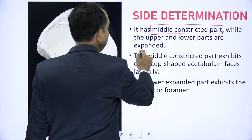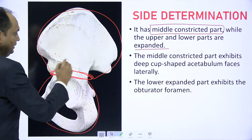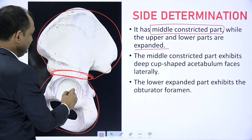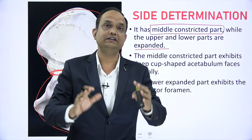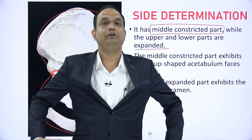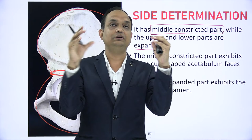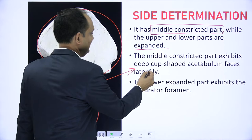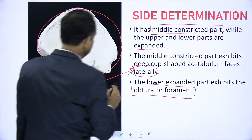The upper and lower parts are expanded. The middle constricted part has the acetabulum. The important thing is that this acetabulum always faces laterally — because you have the hip joint formed by the head of femur, which comes from the lateral sides, so the acetabulum has to face outward. The acetabulum faces laterally and the lower expanded part shows the obturator foramen.